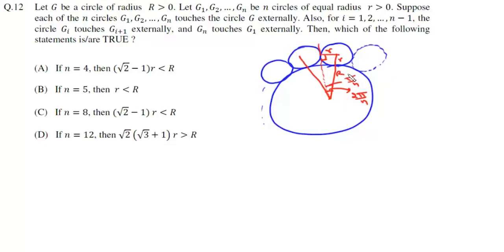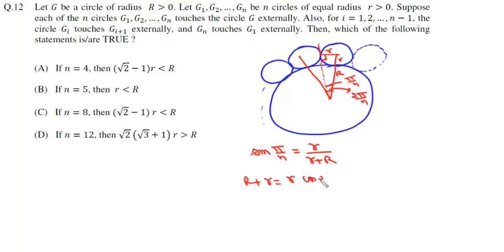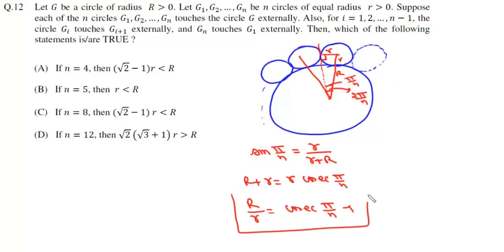This small radius is r, and this capital radius is R. From here we can write: sin(π/n) = r / (R + r). Or we can write R + r = r·csc(π/n), which gives us r/R = csc(π/n) − 1. So from this figure we have got this relation.